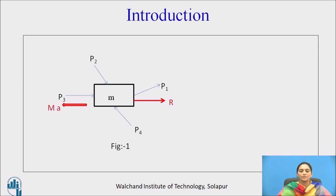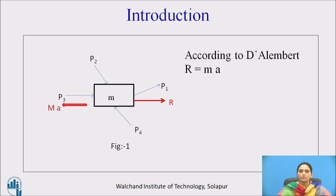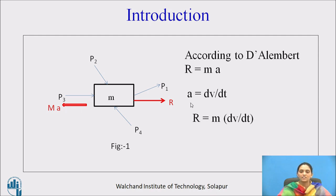That inertia force is the product of mass and acceleration. So, according to D'Alembert's principle, we can write R is equal to M times A. As we know that the derivative of velocity with respect to time is acceleration, substituting into the equation, we get R is equal to M into dV/dt. Therefore, R·dt is equal to M·dV.